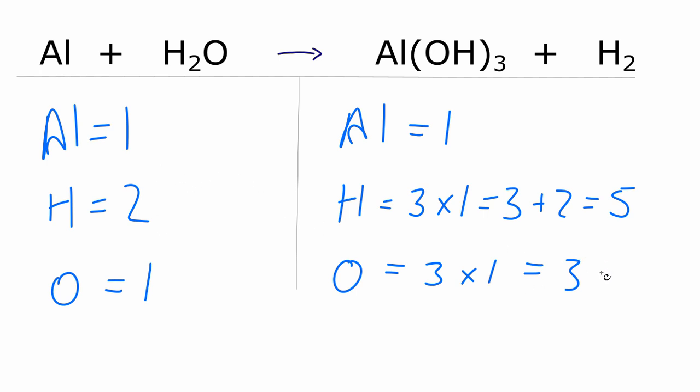What I'd like to do is try and get some even numbers over here, and usually what I'll do is multiply by two to have that happen. So if I put a coefficient of two in front of the aluminum, let's see how that changes things.